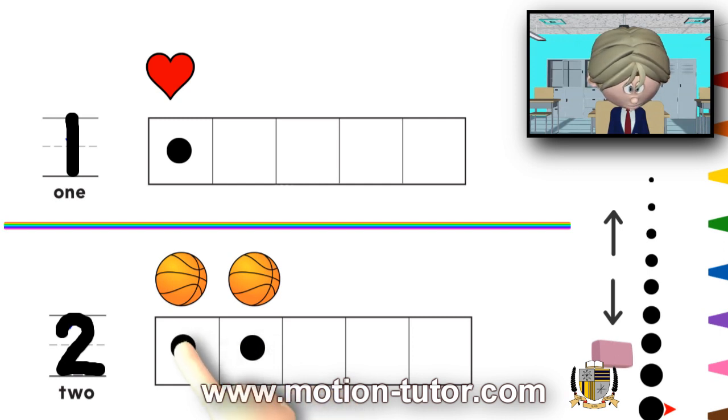See? Here are 2. 1, 2. So, we have 2 spaces taken in this 5 frame.